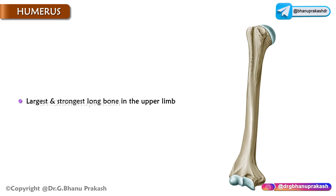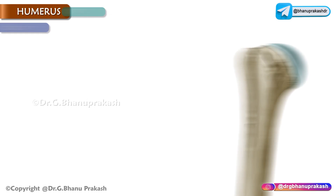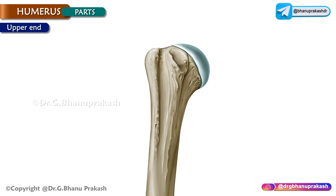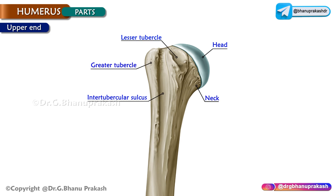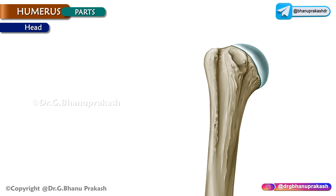Humerus. The humerus is the largest and strongest long bone in the upper limb. The upper end consists of the head, neck, greater tubercle, lesser tubercle, and the intertubercular sulcus. The head forms less than half of a sphere and is smooth.